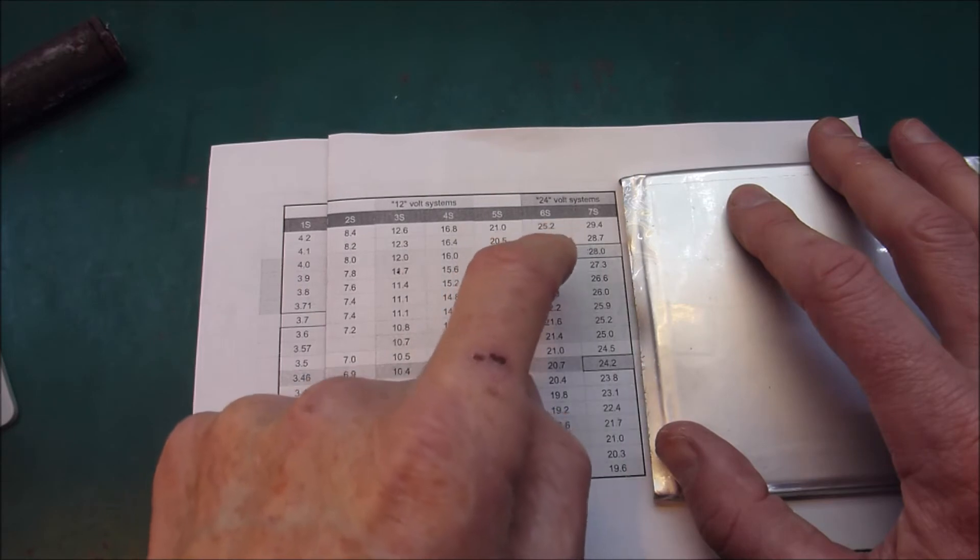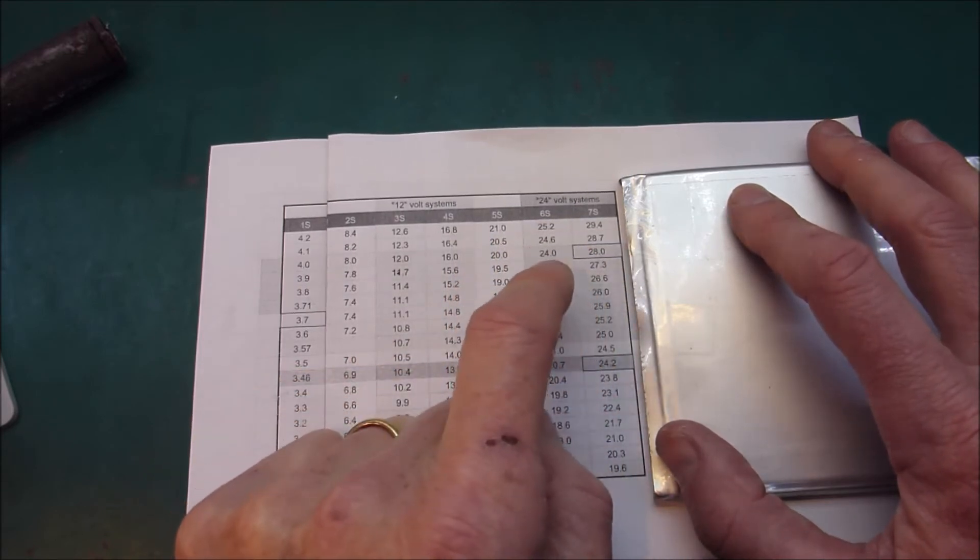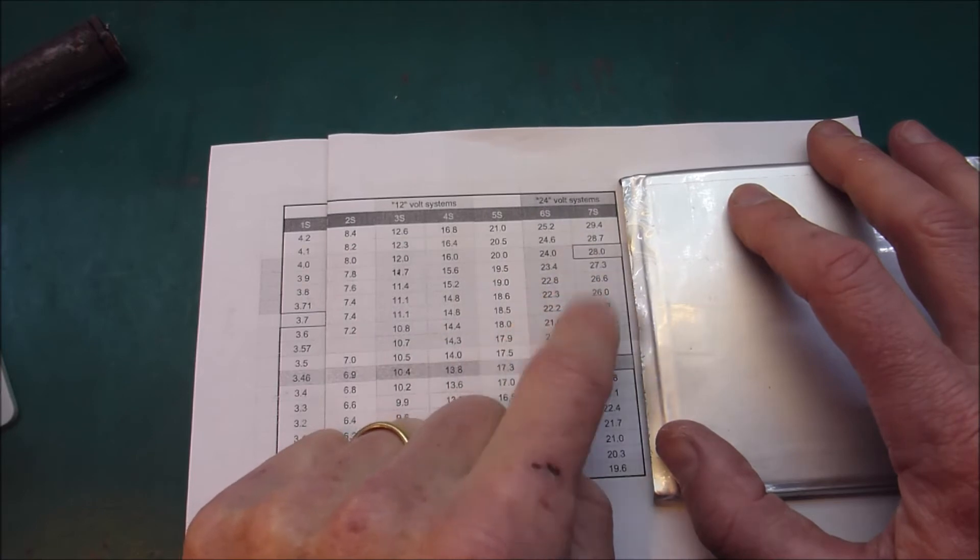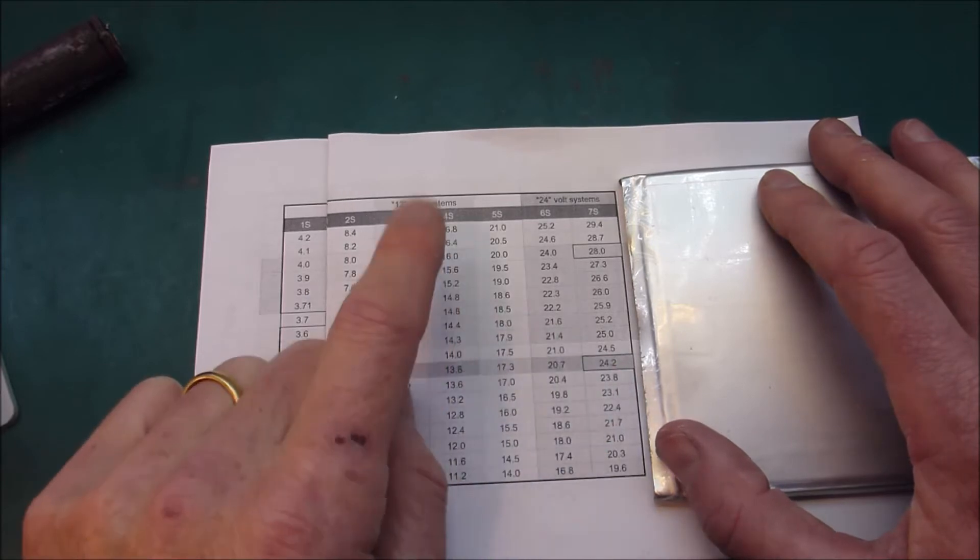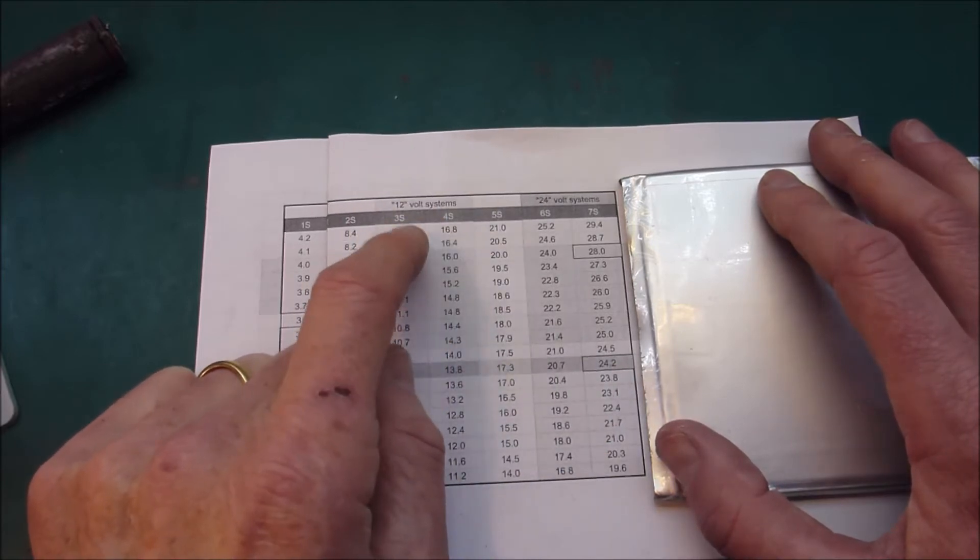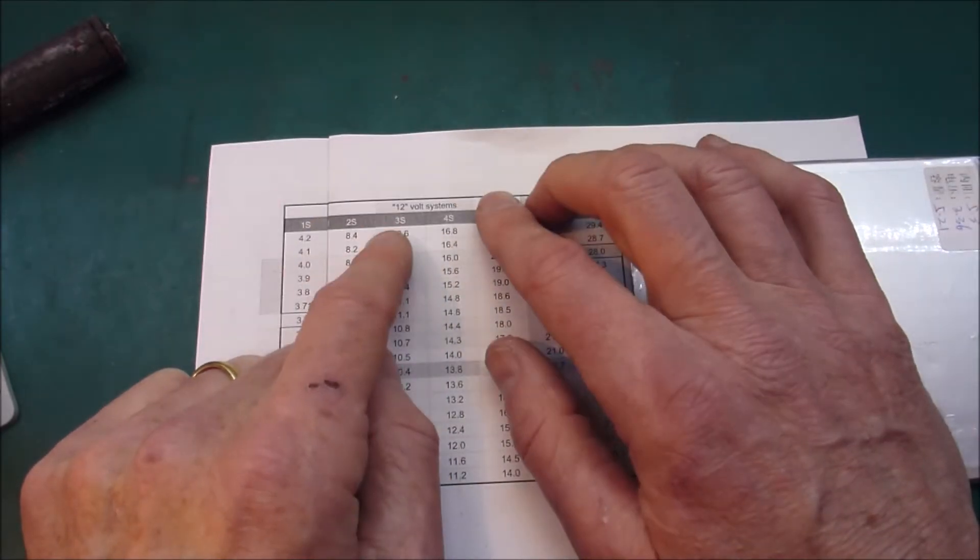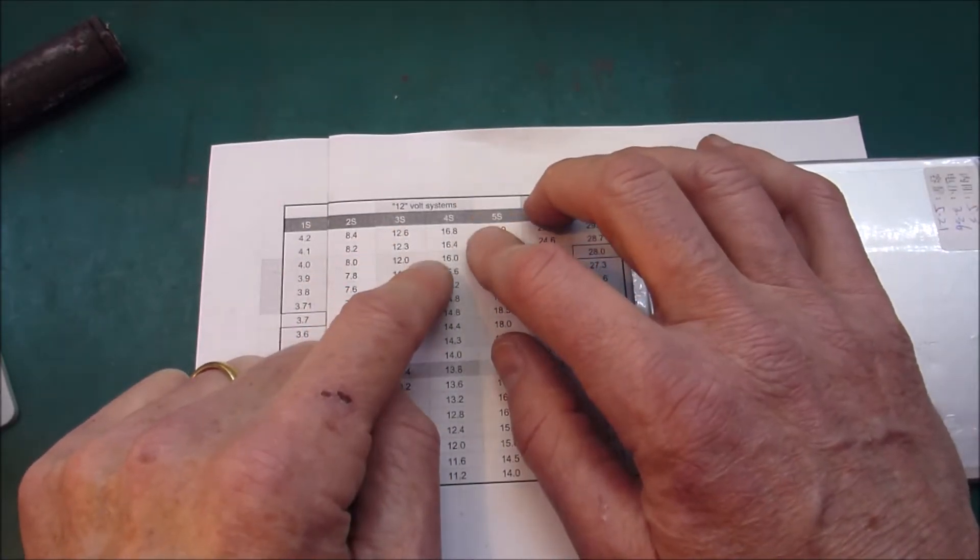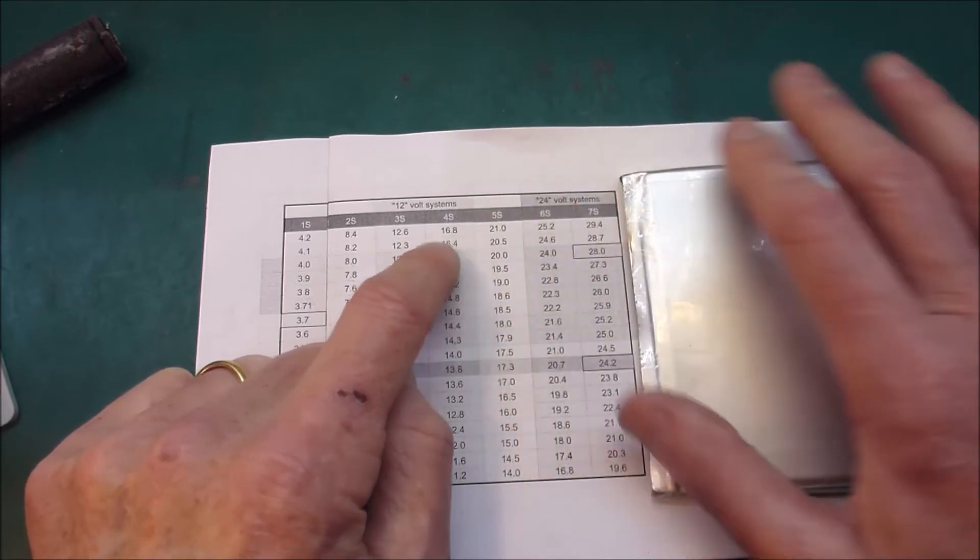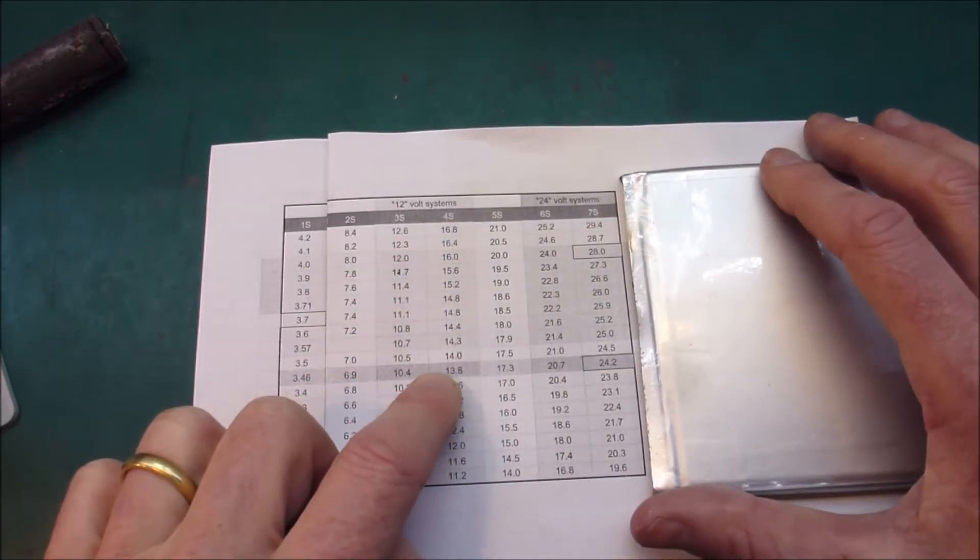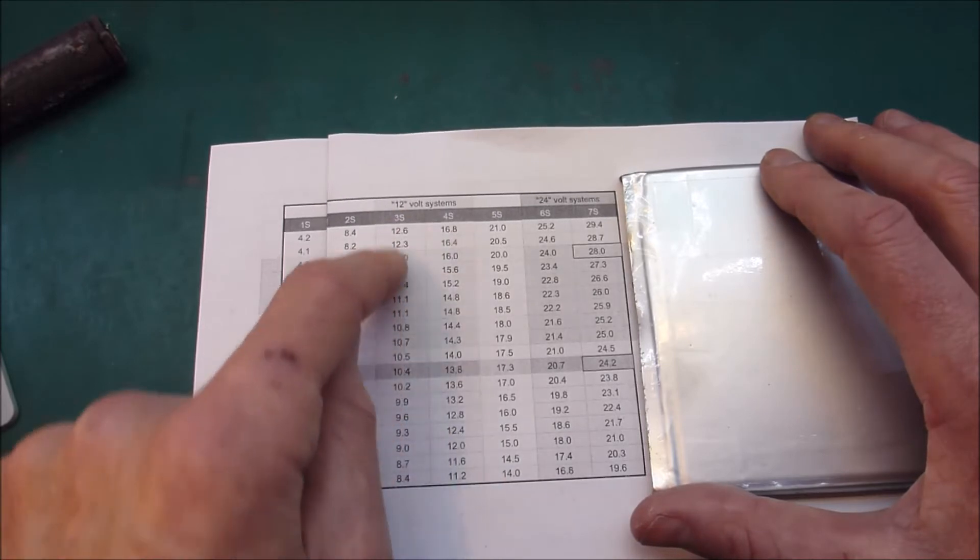And when you're choosing whether to go 6 or 7S mostly it depends on your inverter. Some inverters, I know I used to have an inverter that would stop working, it was a 12 volt inverter that would stop working when the voltage went over 16 volts. So I couldn't run 4S. I had to run 3S for that inverter. But it also, funnily enough, it was a cheap crappy inverter.